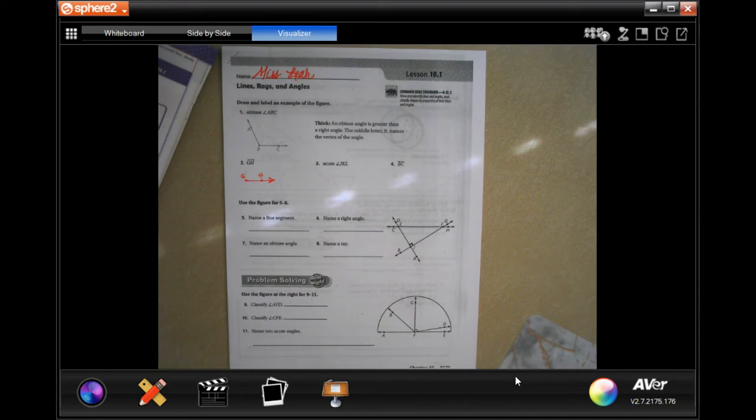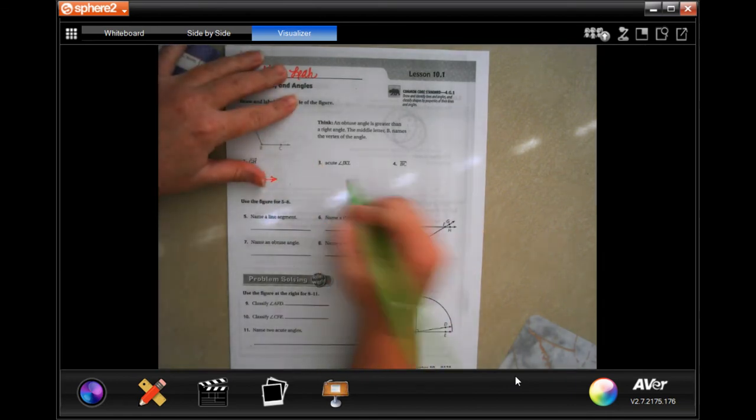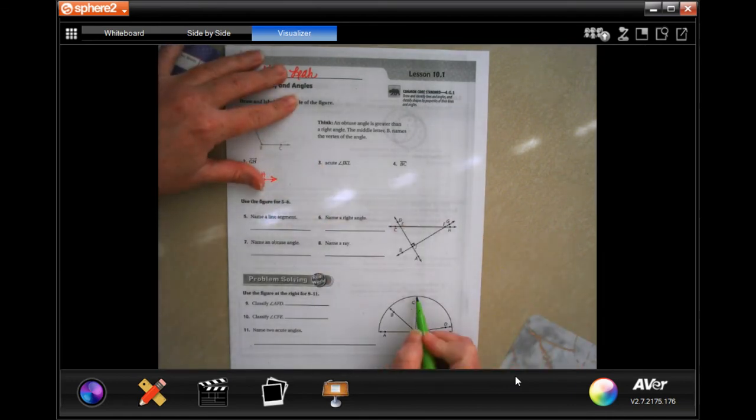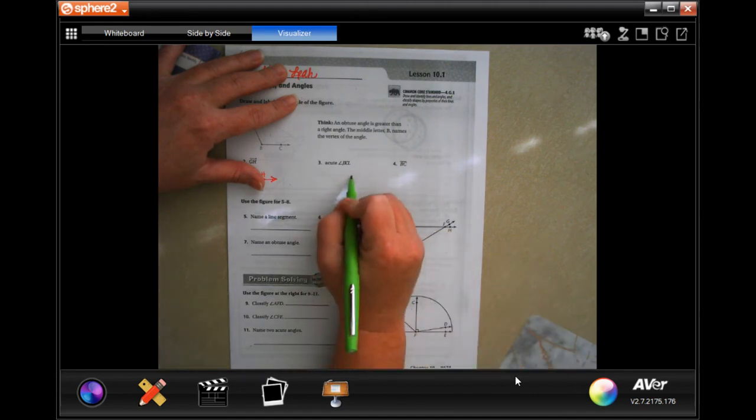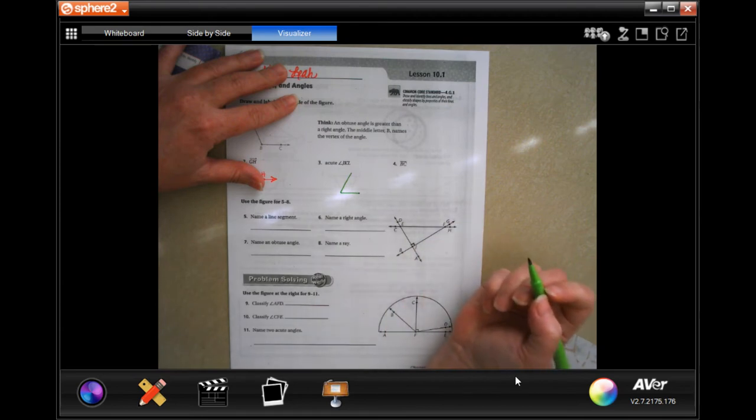Now it wants an acute angle for J, K, and L. All we need is something smaller than 90 degrees. This is 90 degrees, going straight across, straight up and down. We're going to make it smaller than that.